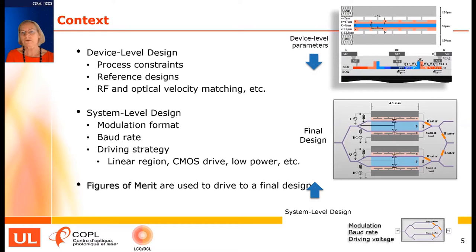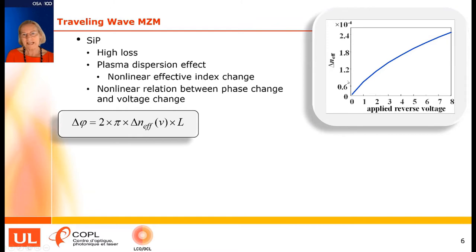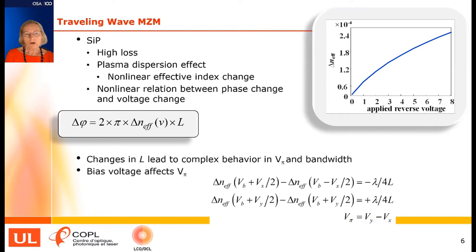In order to achieve that combination, we need some sort of figure of merit. When we use traveling waves in silicon photonics, there are differences from other materials. In particular with silicon, there is high loss, and there is something known as the plasma dispersion effect. When I apply reverse voltage to the modulator, the change in the effective index has a nonlinear response to that voltage — which is unusual and not what we find with other materials.